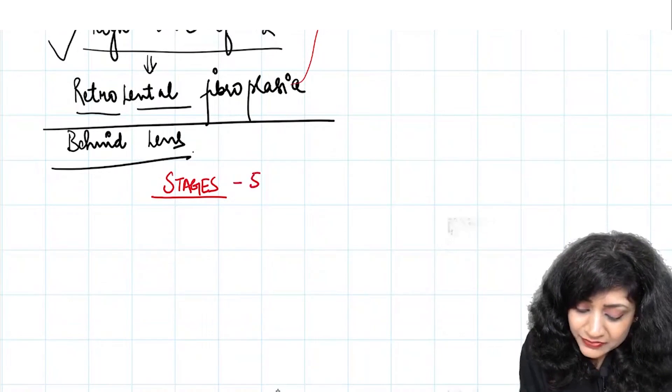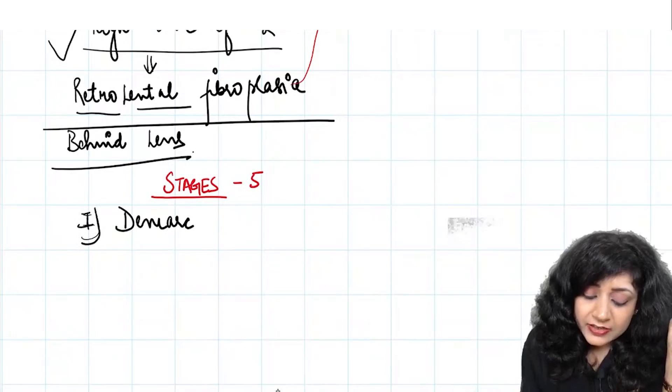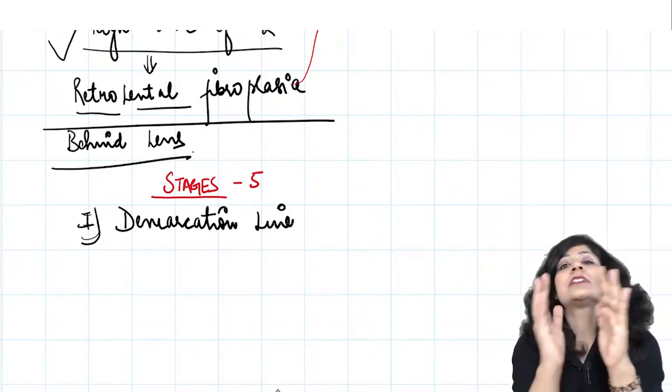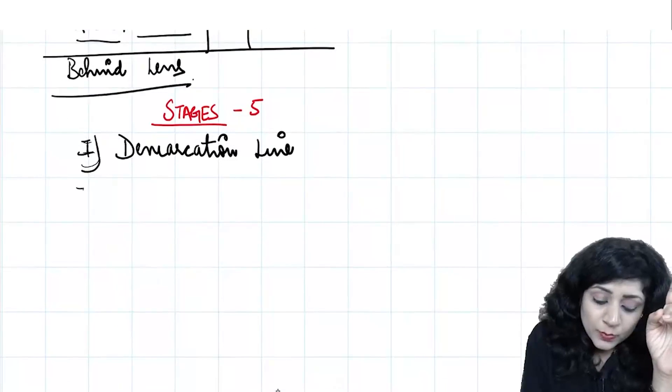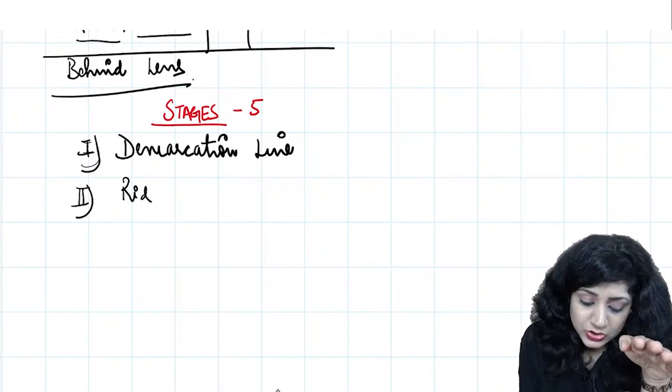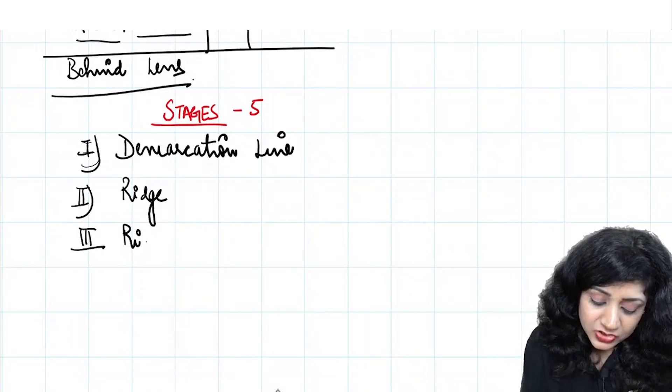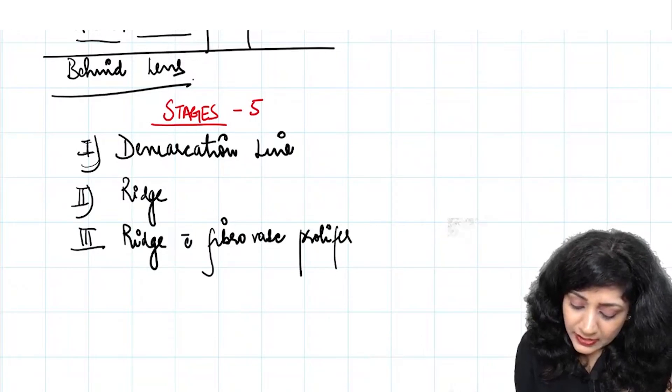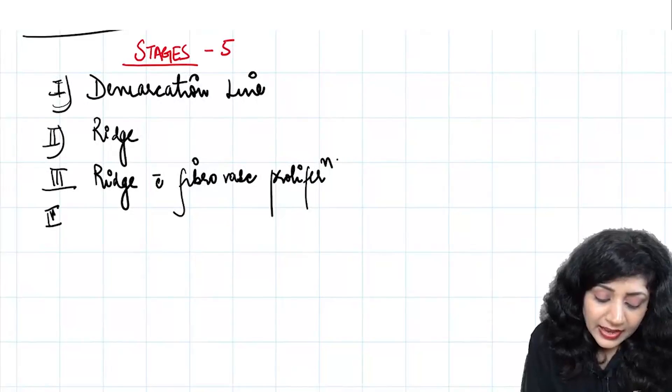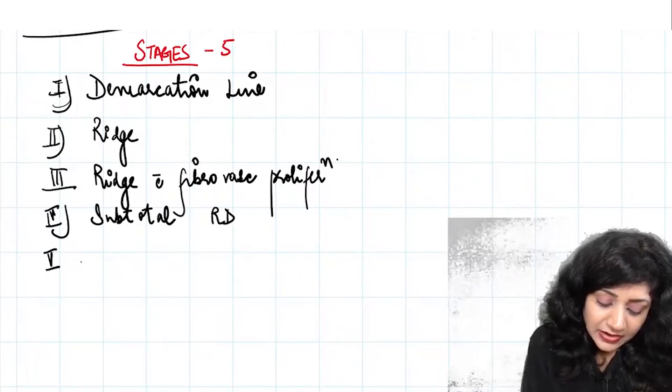What are your 5 stages? Let's revise. Stage 1, we have just a demarcation line between the vascular and avascular retina. Number 2, this gets elevated to form a ridge. Number 3, over the ridge you're getting fibrovascular proliferation. Then we have stage 4 and stage 5, where I will have subtotal RD and finally total RD.